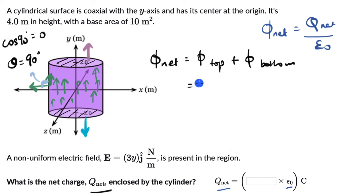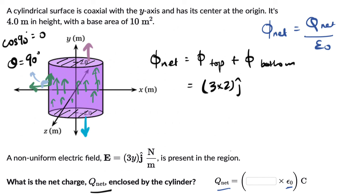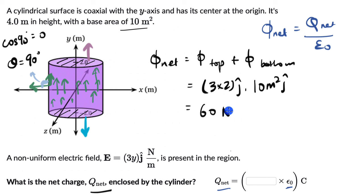For the top surface, y = 2, so E = 3(2) = 6 ĵ. The flux through the top is E · A = 6 ĵ · 10 ĵ = 60 N·m²/C.